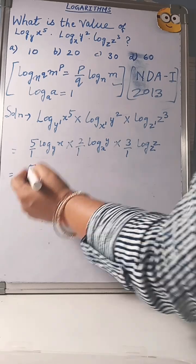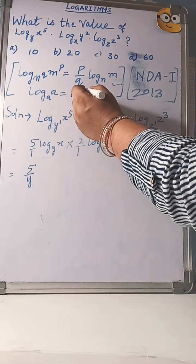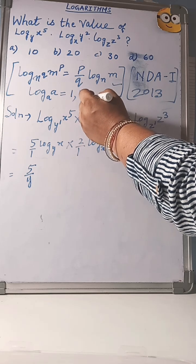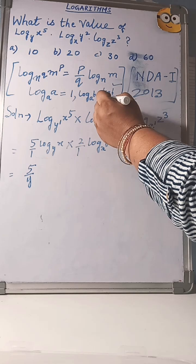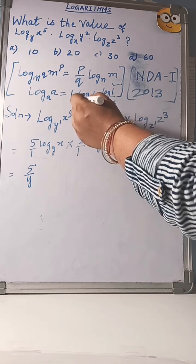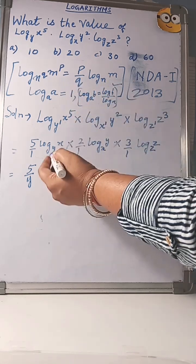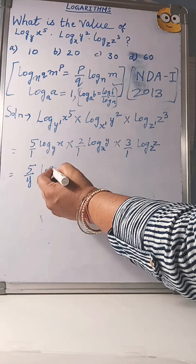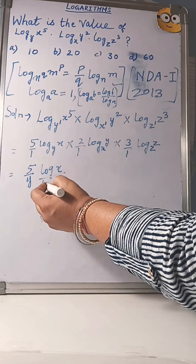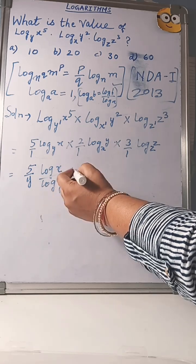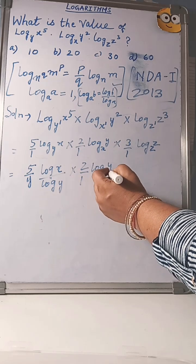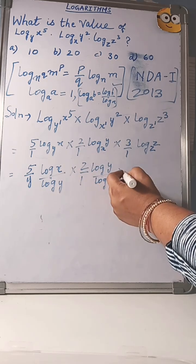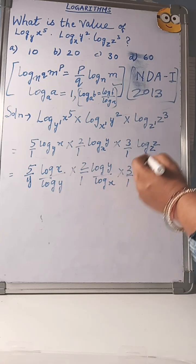Now, using base changing property, log base a of b, you can write this as log b by log a. Now using this property, 5 by 1 log x by log y into 2 by 1 log y by log x into 3 by 1.